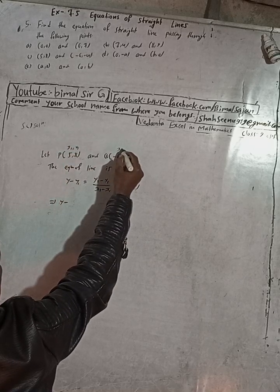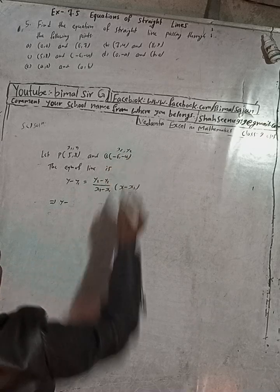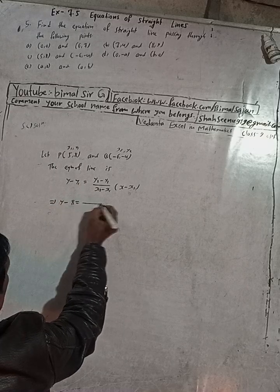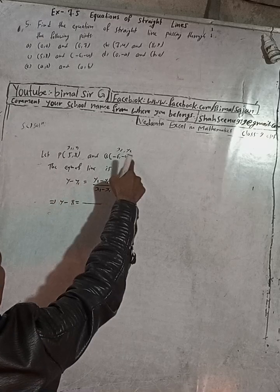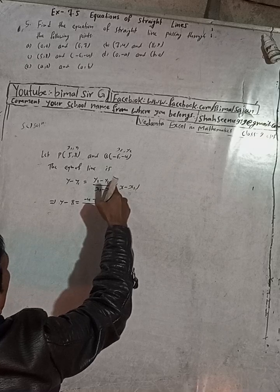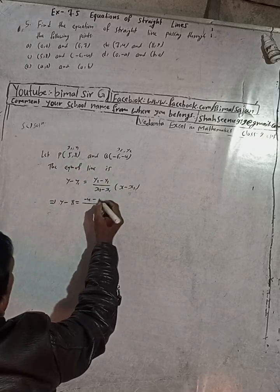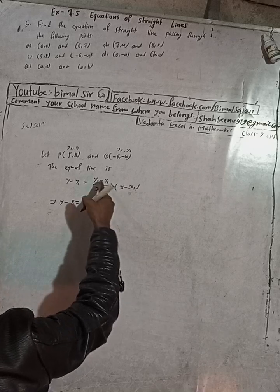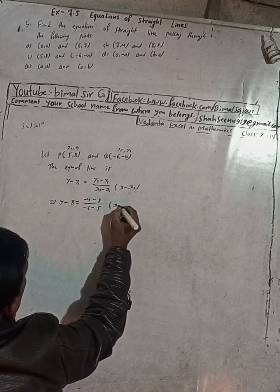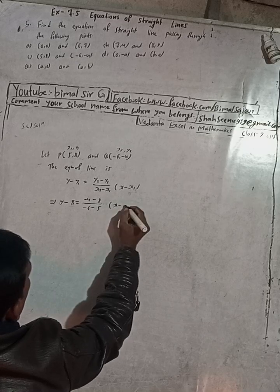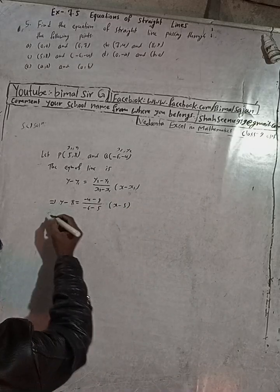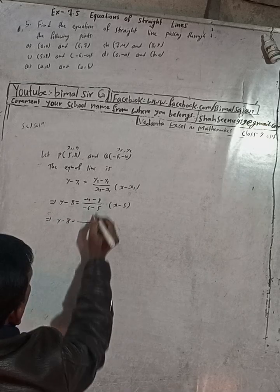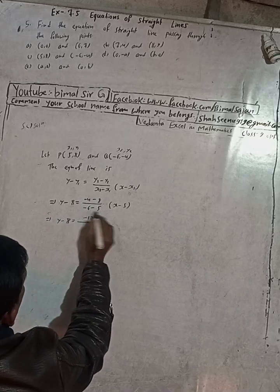Here x1 = 5, y1 = 8, x2 = -6, y2 = -4. Substituting: y minus 8 equals (-4 minus 8) over (-6 minus 5), into (x minus 5). That gives y minus 8 equals (-12) over (-11), times (x minus 5).